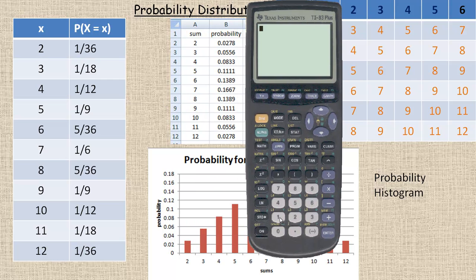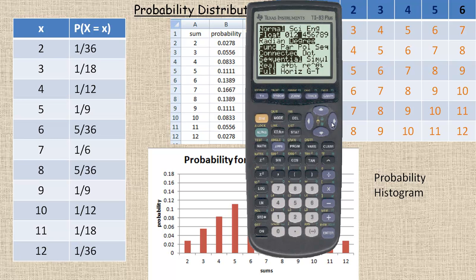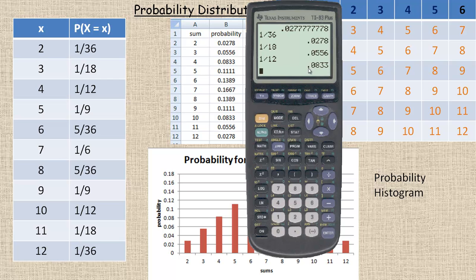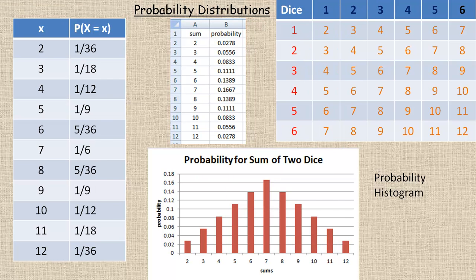So one chance in 36 was my probability for the sum of two, which is 0.0278 repeating. I like to leave probabilities to four decimal places. So we'll do the same thing again. 1/18, 1 divided by 18 is 0.0556. 1 chance in 12, that's 0.0833. So there's all the probabilities. I changed them into decimal form before I drew my histogram in Excel.